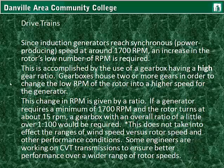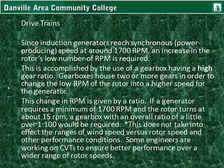This change in RPM is given by a ratio. If a generator requires a minimum of 1700 RPM and the rotor turns at about 15 RPM, a gearbox with an overall ratio of a little over 1 to 100 would be required. A ratio of 1 to 25 or 1 to 50 would be a little more realistic. With doubly fed induction generators and other types of generators, it is not necessary to keep the high speed shaft right at around 1700 RPM — this is just an example. Some engineers are working on continuously variable transmissions to ensure better performance over a wider range of rotor speeds.